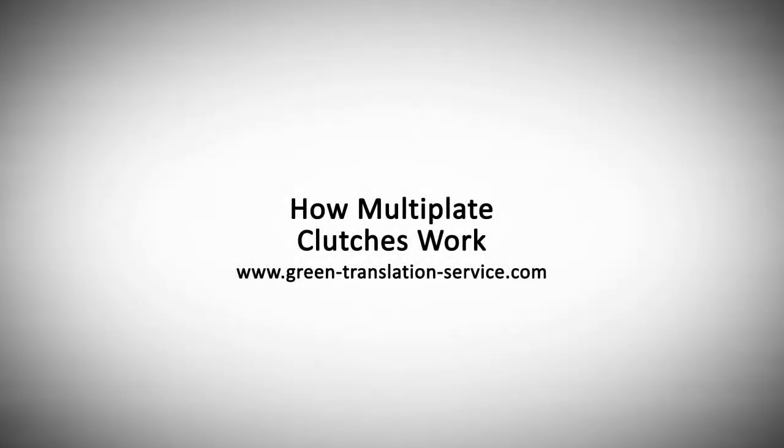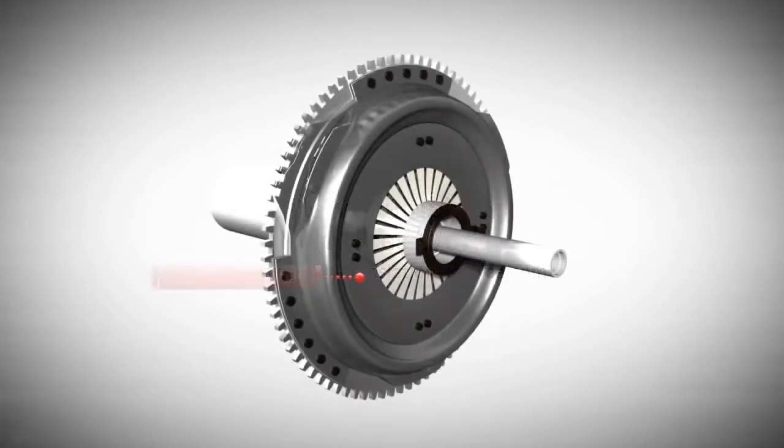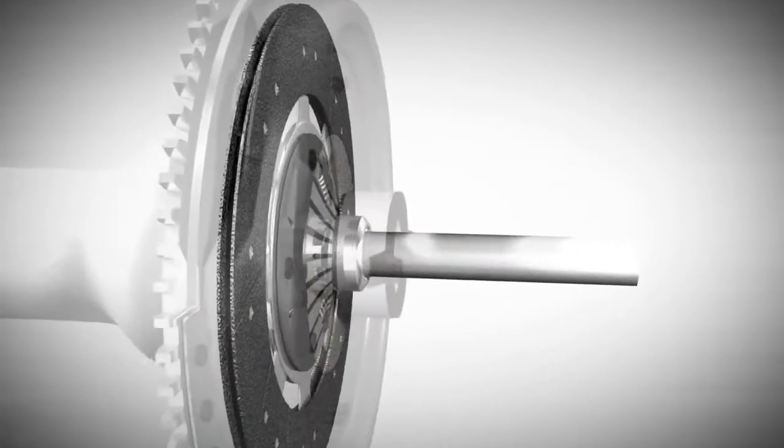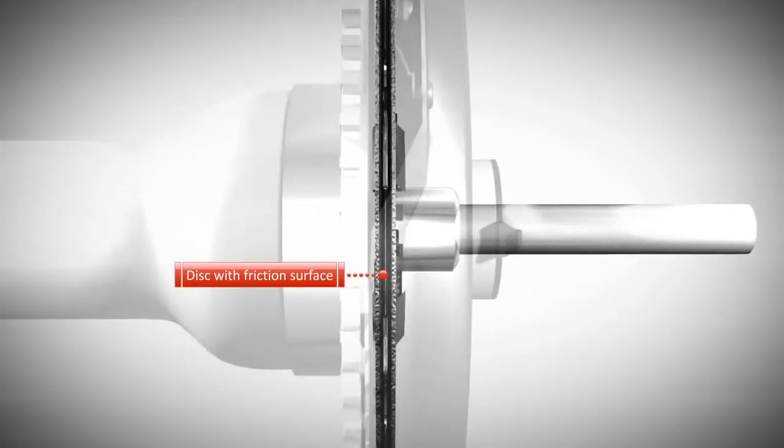Multi-plate clutches work with several friction disks, unlike drive friction clutches used in most cars with manual transmissions where only one friction disk with two friction surfaces is used to transmit power from the engine to the transmission.